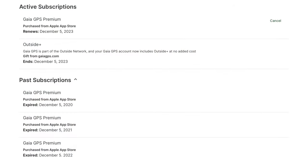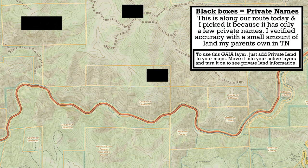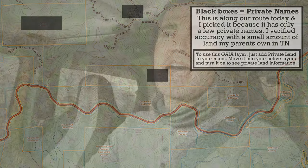The problem is, with my basic Gaia GPS membership — which I pay about $35 a year for — I have a private land layer that also gives me all the names of landowners. I verified it against land my parents own and it was correct and accurate. Why spend $99 when you can get it with Gaia for $35?